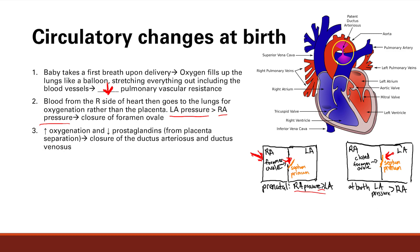Finally, increases in oxygenation through the lungs and decreased prostaglandins from the placenta cause closure of the ductus arteriosus and the ductus venosus. Prostaglandins E1 and E2 keep the ductus arteriosus patent — they keep it open. So when prostaglandins decrease due to placental separation, the ductus arteriosus will close off.